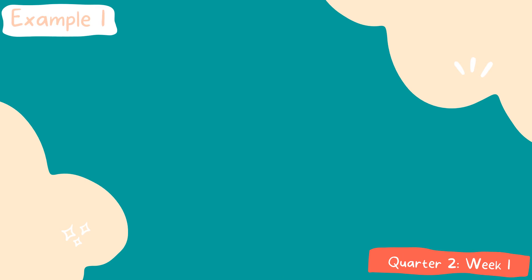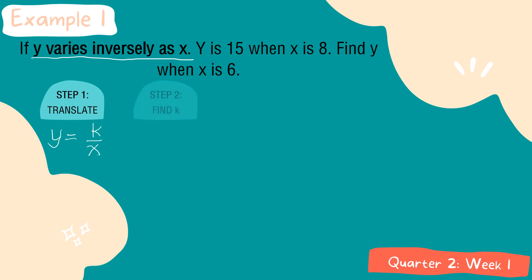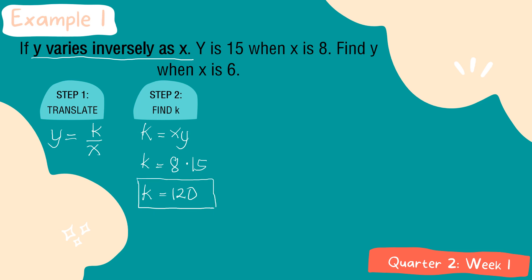Example one: if Y varies inversely as X, and Y is 15 when X is 8, find Y when X is 6. For step one, translating Y varies inversely as X into an equation gives Y is equal to K over X. For step two, we get the constant of variation by finding the product of the two variables: K is equal to X times Y, so K equals 8 times 15, which is equal to 120. So the constant of variation is equal to 120.